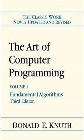Vol. 4, Fascicle 5 — Mathematical Preliminaries Redux, Backtracking, Dancing Links, Addison-Wesley, 25 April 2019, 350 pp. ISBN 978-0-13-467179-6. Will become part of Vol. 4B. Vol. 4, Fascicle 6 — Satisfiability, Addison-Wesley, 8 December 2015, xiii + 310 pp. ISBN 978-0-13-439760-3. Will become part of Vol. 4B.